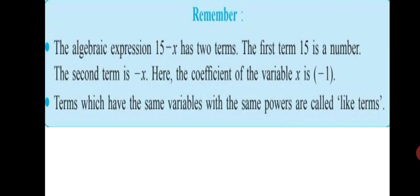Remember, the Algebraic Expression 15 minus x has two terms. The first term, 15 is a number. So, only a number also can be counted as a term. The second term is minus x. x is a variable. So, here, the coefficient of the variable x is minus 1. You can say that minus 1 into x is minus x.